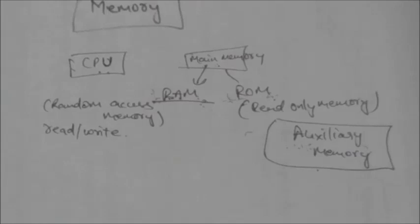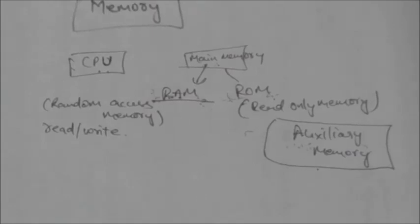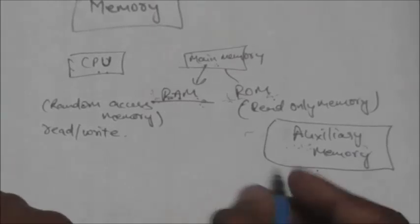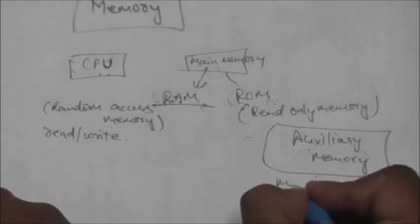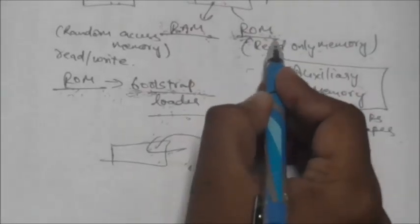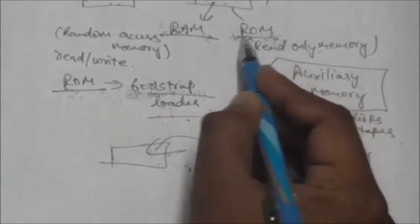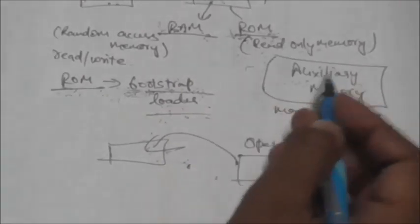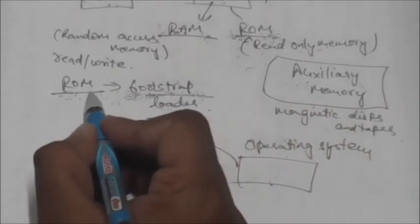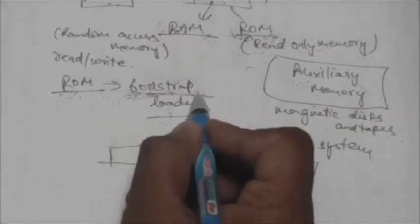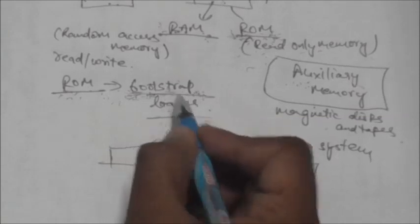Examples of auxiliary memories are magnetic disks and tapes. Now see, ROM's content is not destroyed whenever power is turned off. This ROM stores a program called bootstrap loader.